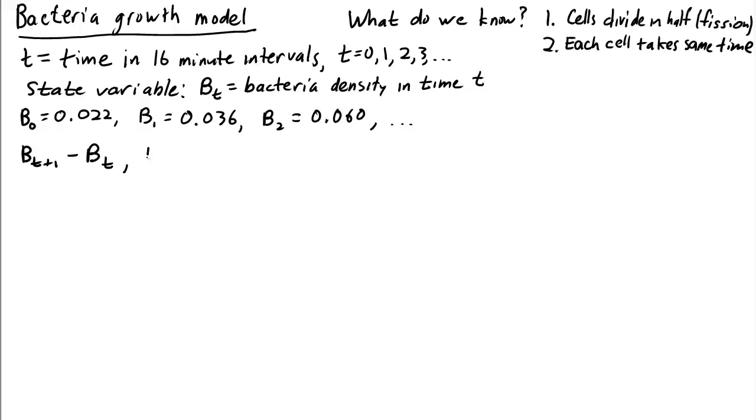So for example, in the first time step, if you look at b1 minus b0, well, that's just the difference. It's 0.014. And we could continue. b2 minus b0 is equal to 0.024. And we could do this for each data point.